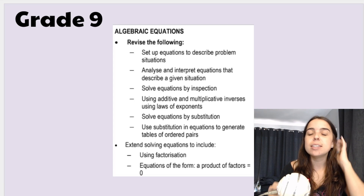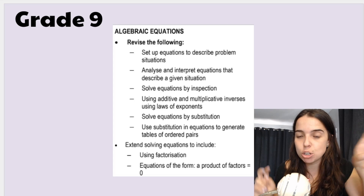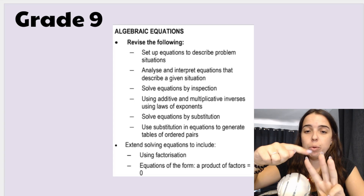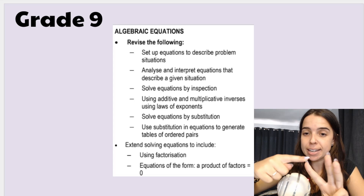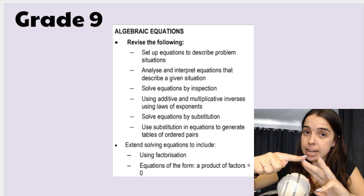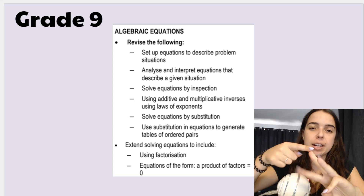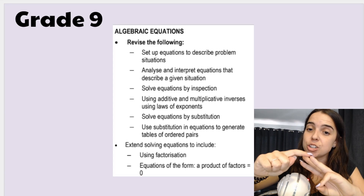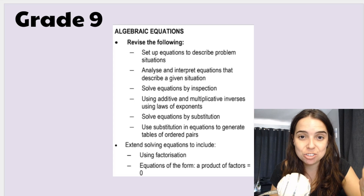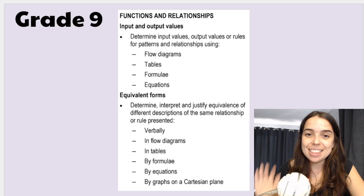I have a video that explains the difference between these three big algebra topics in grade 9, which carries over into grade 10 as well. We've got distributing or expanding — simplifying algebraic expressions. We've got factorizing, which is also part of algebraic expressions and simplifying. And then we've got equations. I explain the differences between those three and show you exam questions, so check the links in the description box below.